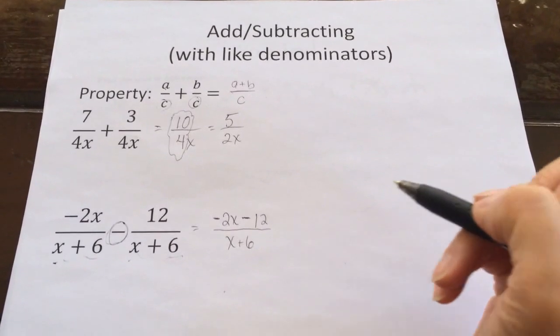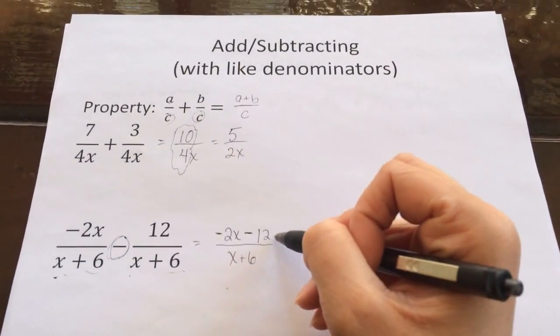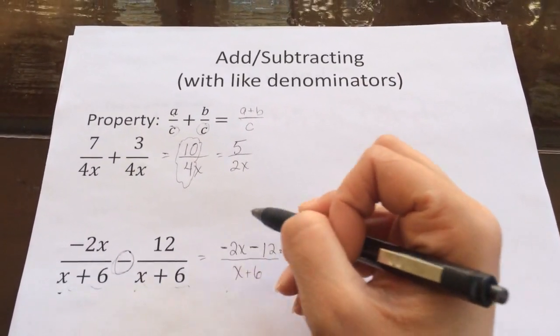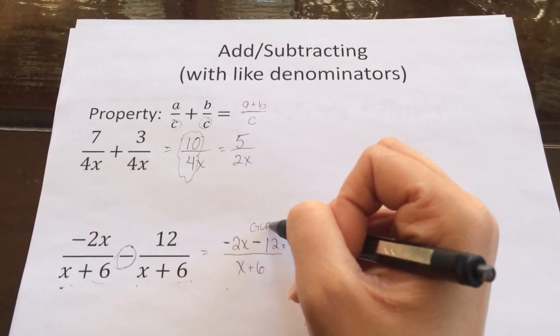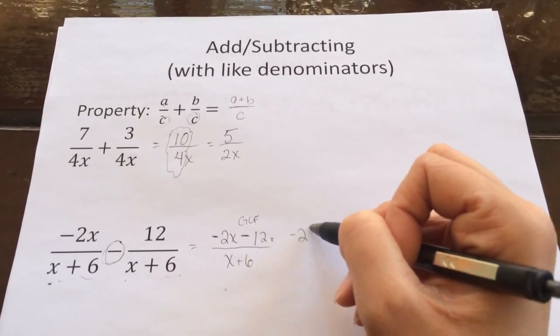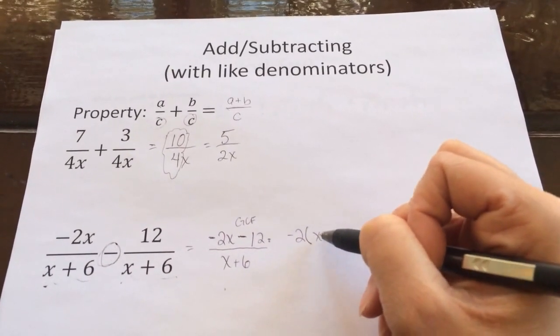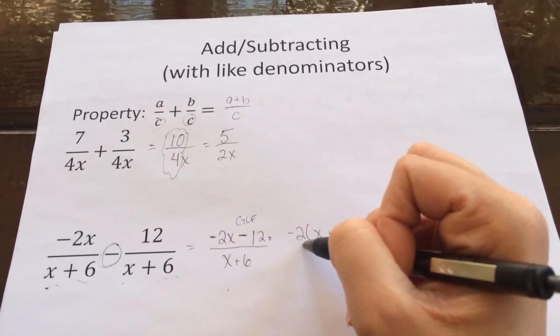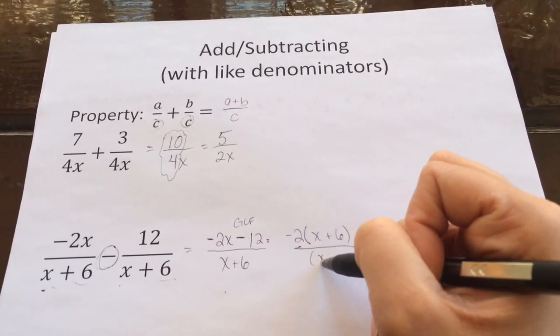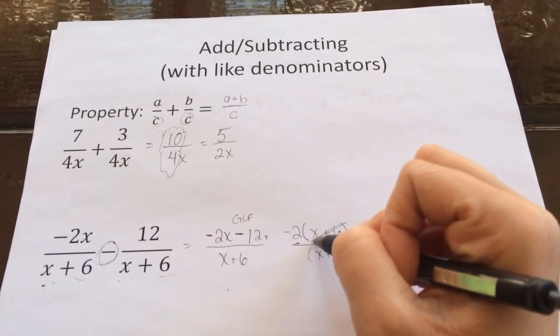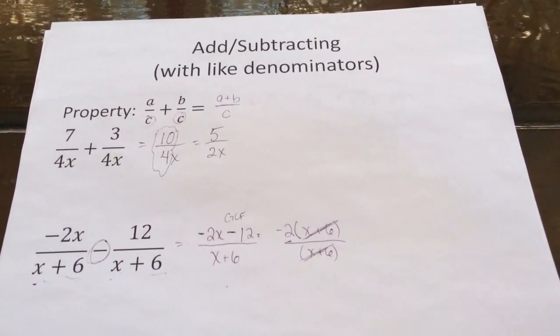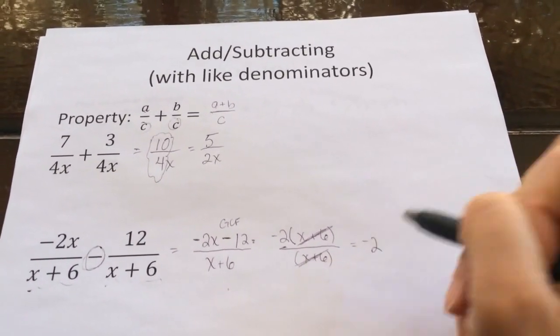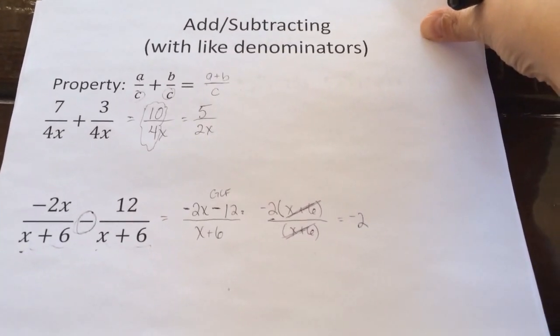Now, you don't want to leave your answer like that. You need to be able to recognize that I can factor this numerator here. I can pull out a greatest common factor of negative 2. If I pull out a negative 2, that leaves me with x plus 6, which will cancel the x plus 6 in the denominator, and I'm just left with negative 2 for my final answer there.